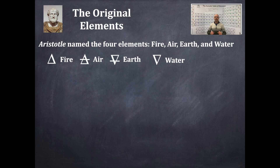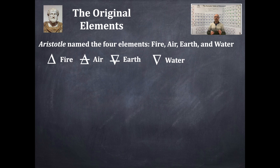Fire and water are exactly opposites of each other — those triangles are inverted 180 degrees. And air and earth are exactly opposites of each other as well: the air is above, the earth is below.